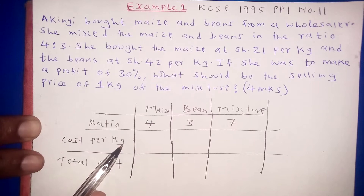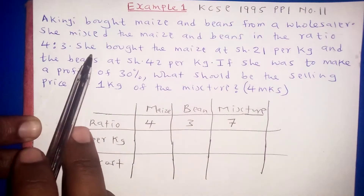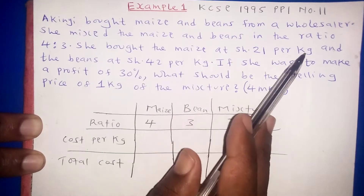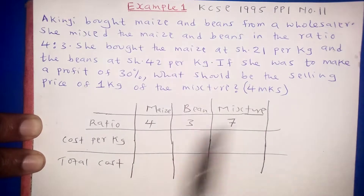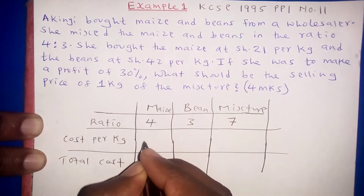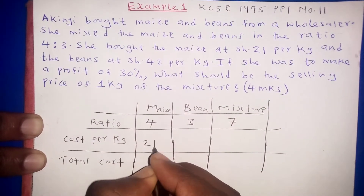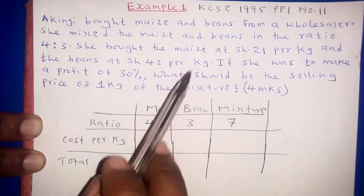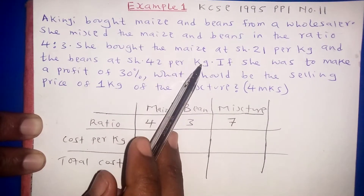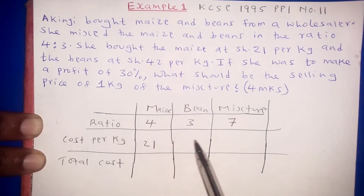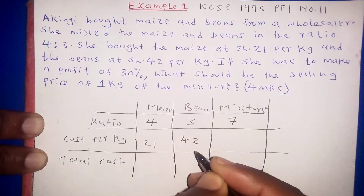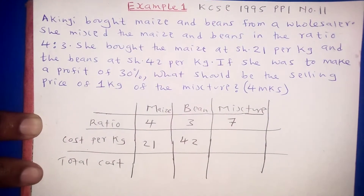Moving to the cost per kg: we are told she bought the maize at 21 shillings per kg, and the beans at 42 shillings per kg.